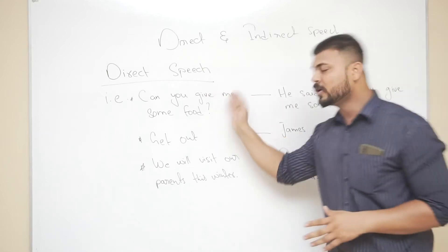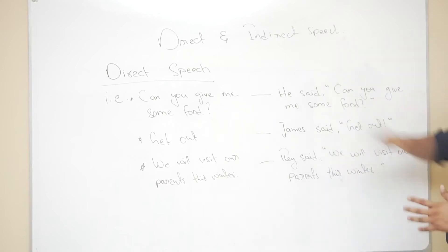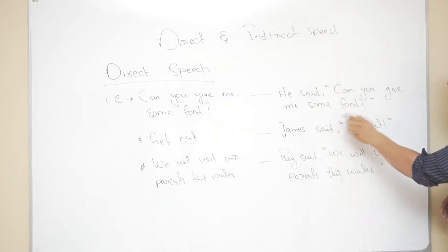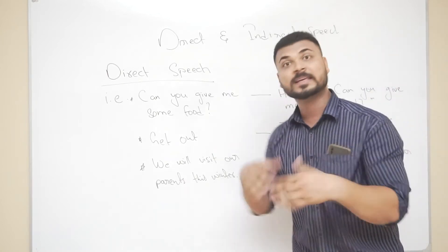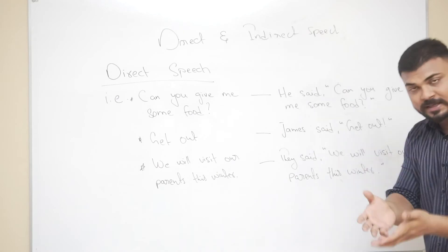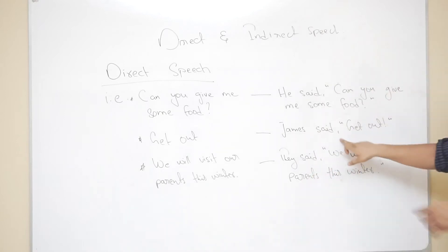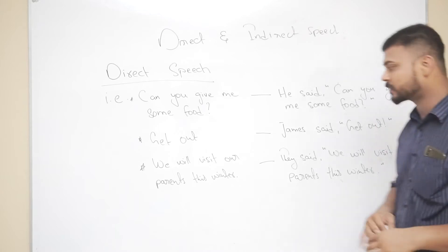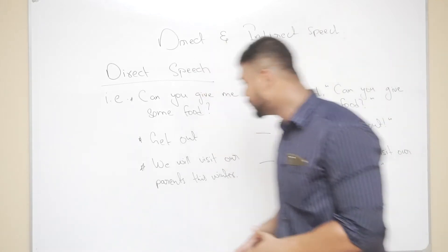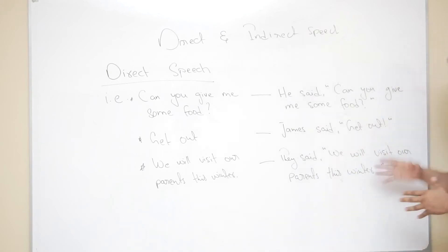Now we have more examples of direct speech. 'Can you give me some food?' — suppose the speaker is a male. So we say: He said, 'Can you give me some food?' with a question mark inside the inverted commas. Another example: 'Get out.' Suppose Mr. James says it, so it becomes: Mr. James said, 'Get out!' with an exclamation mark inside the inverted commas. And the last example: 'We will visit our parents this winter.' So they said, 'We will visit our parents this winter.' These are the examples of direct speech.